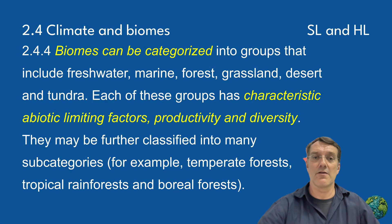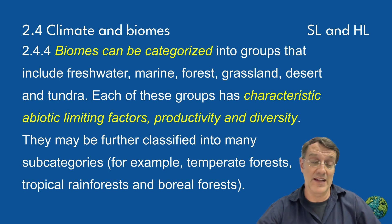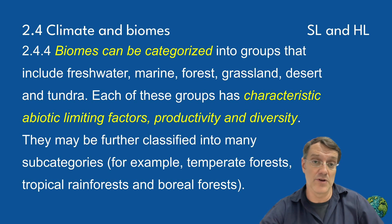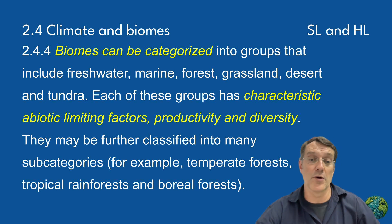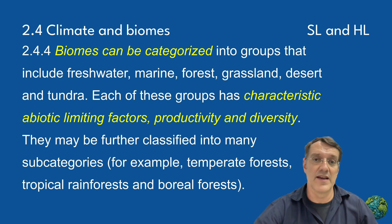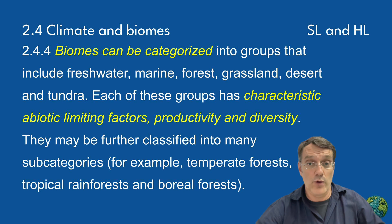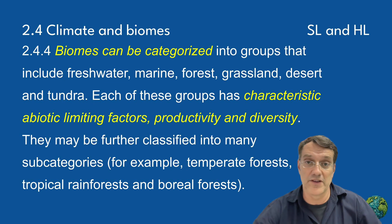Biomes can be categorized into several major groups: freshwater, marine, forest, grassland, desert, and tundra. Each has characteristic abiotic limiting factors that affect its productivity and biodiversity. These categories can be further divided into subcategories — for instance, forests include temperate, tropical, and boreal types, each with its own distinct characteristics.